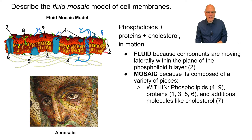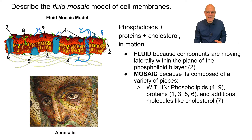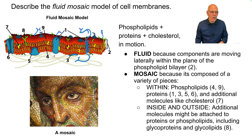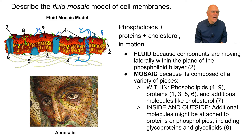Within the phospholipid bilayer, you have phospholipids at positions four and nine, proteins at one, three, five, and six, and molecules like cholesterol shown at seven. Inside and outside the phospholipid bilayer, you might have additional molecules attached to proteins or phospholipids — those might be glycoproteins, which are not shown, but at eight you have a glycolipid. Glyco means it's a carbohydrate, and it's attached to the fatty acids shown here.